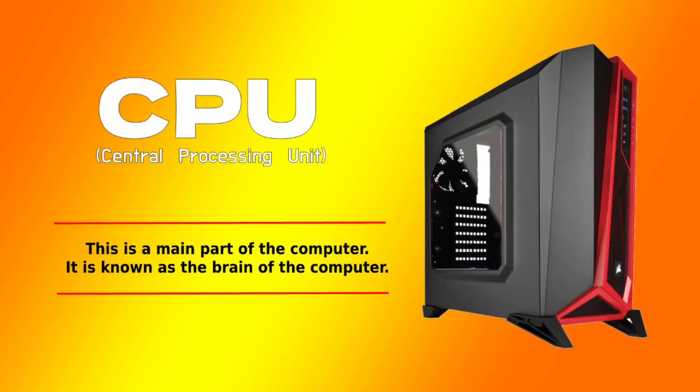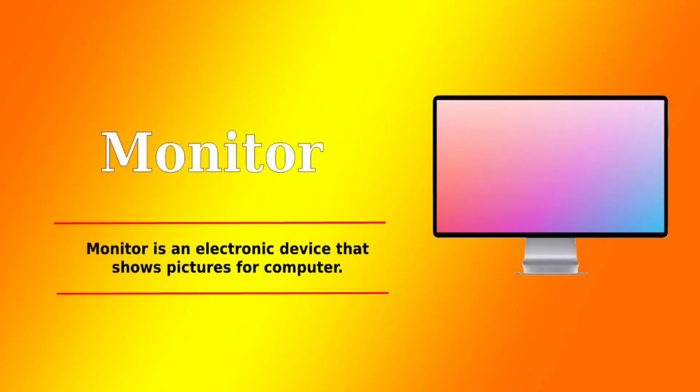CPU — Central Processing Unit. This is the main part of the computer. It is known as the brain of the computer. Monitor — Monitor is an electronic device that shows pictures for the computer.